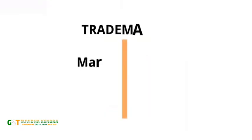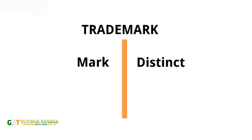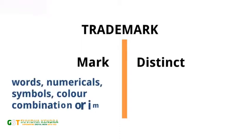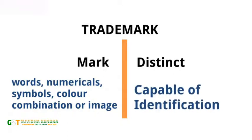Trademark requires two things. First, it should be a mark which can be in the form of words, numbers, color combination, symbol, or any image. Second, it should be a distinct mark that is capable of identification of a business or its products or services.